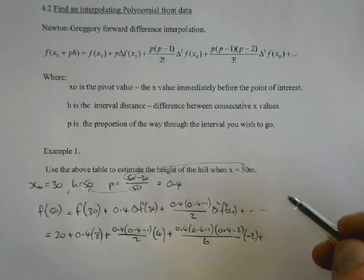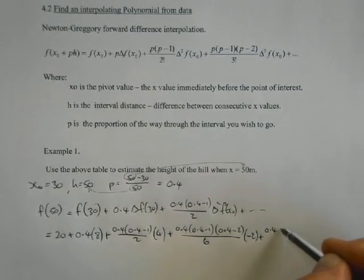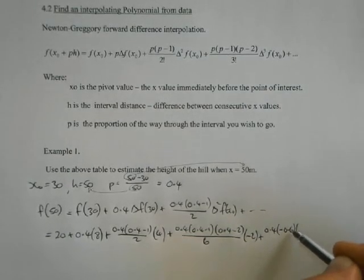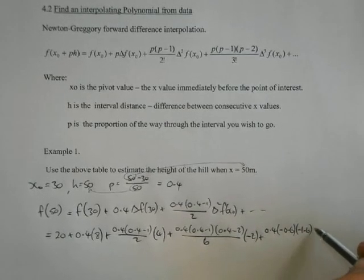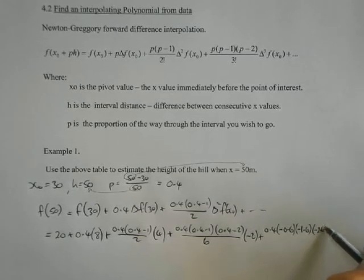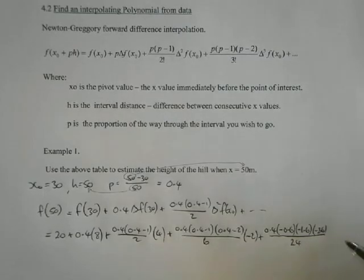Plus, we'll do one more term, so we've got four differences, will be 0.4 times 0.4 minus 1, which will be negative 0.6, just trying to save a little space here, times 0.4 minus 2, which will be negative 1.6, times 0.4 minus 3, which will be negative 2.6, over 4 factorial, which is 24, times the fourth difference, which is 2, if you look back on that previous table.